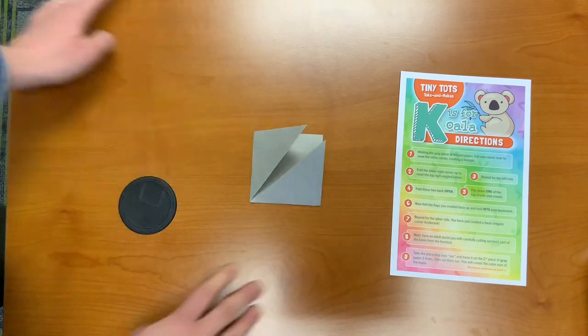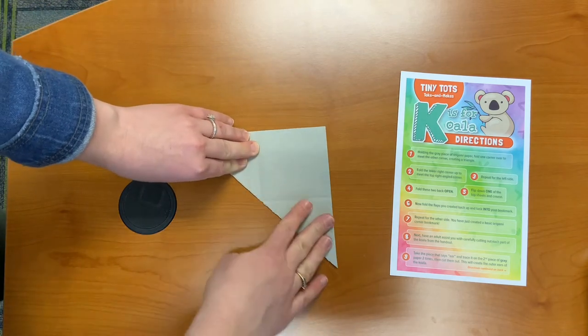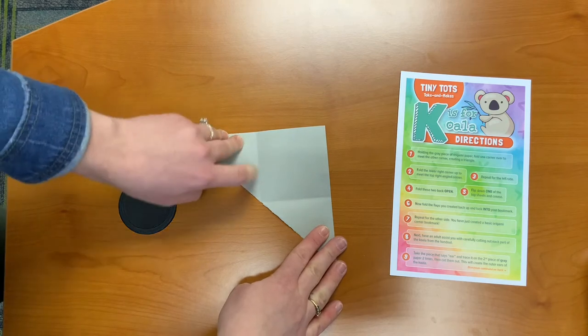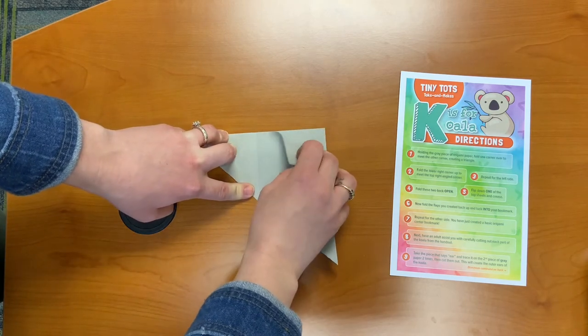Step three. Repeat for the left side. Step four. Fold these two back open. Step five. Flip down one of the top sheets and crease.